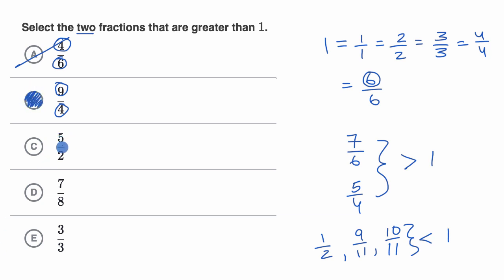And then we see again, five halves. Two halves is equal to one, so five halves is definitely greater than one, so I like that one as well. And notice, five is greater than two.